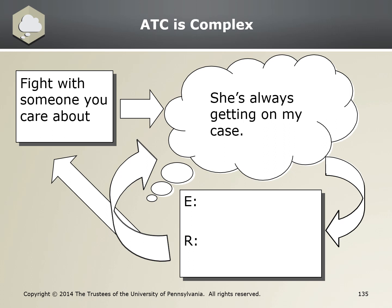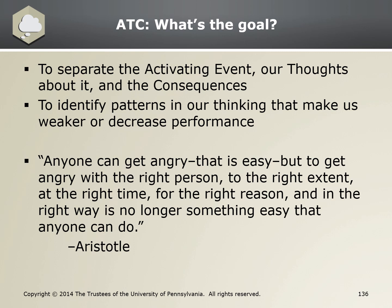We're going to use an ATC example to show how each part of the model influences the other parts. Remember that ATC's system is dynamic. Thoughts drive consequences ER, which can affect future thoughts and create new activating events. Our thoughts lead to consequences, which can sometimes reinforce those thoughts. The goal of ATC is to separate the activating event, our thoughts about the AE, and the consequences ER, and to identify patterns in our thinking that make us weaker or decrease performance. Remember that ATC is not a problem-solving skill, but rather a skill to build self-awareness.